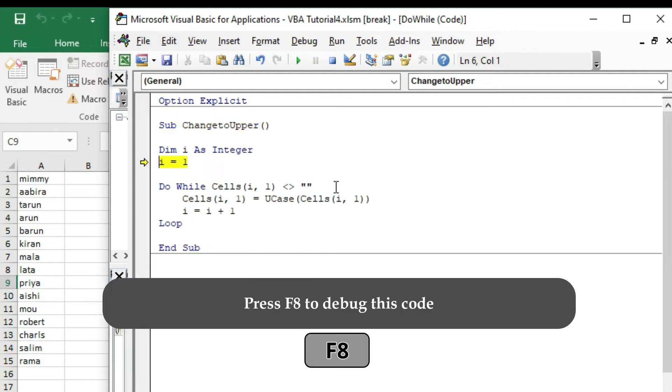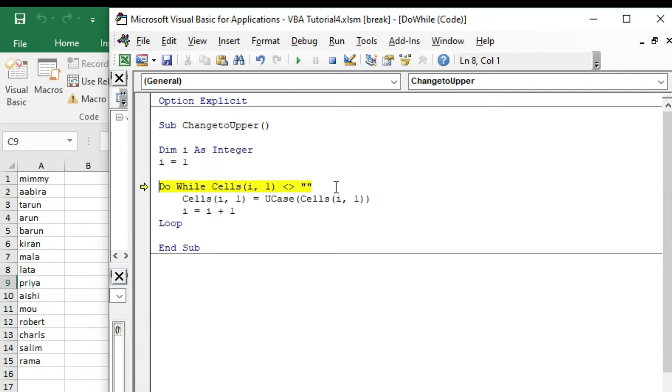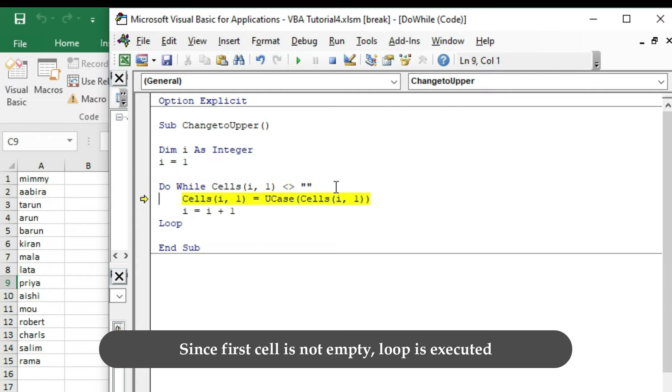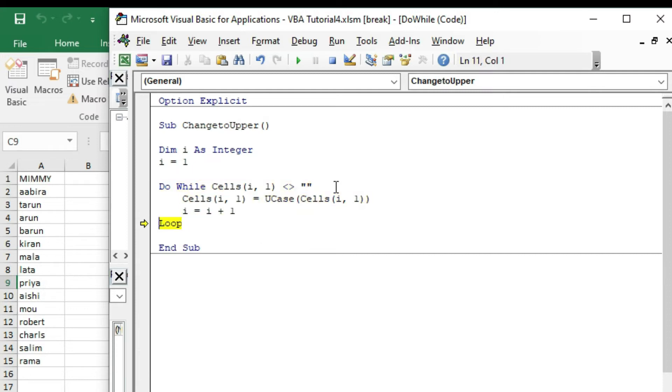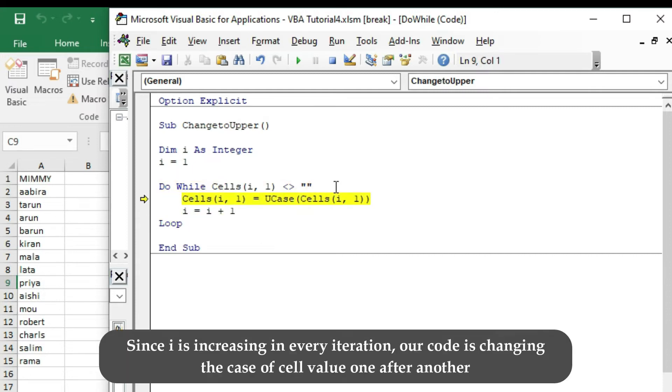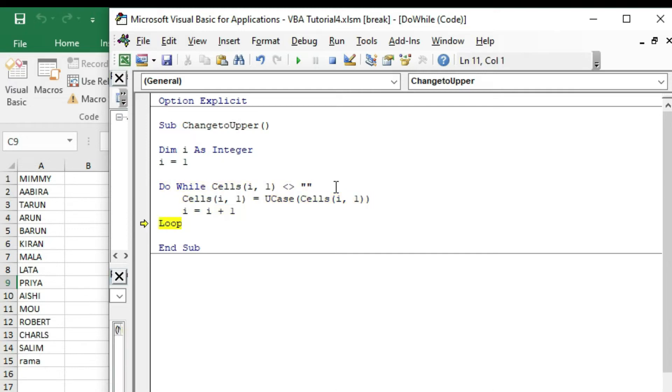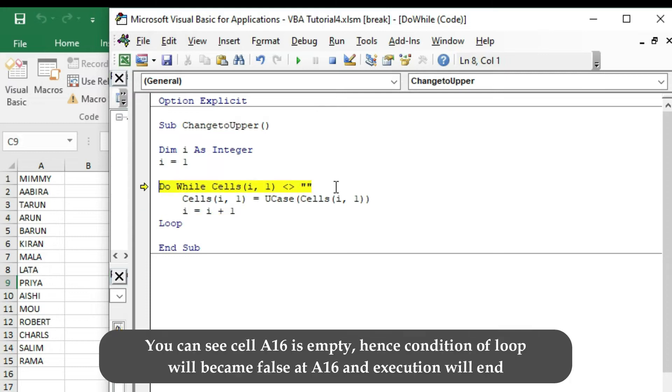Press F8 to debug this code. Since first cell is not empty, loop is executed. Since i is increasing in every iteration, our code is changing the case of the cell value one after another. You can see, cell A16 is empty. Hence, condition of loop will become false at A16, and execution will end.